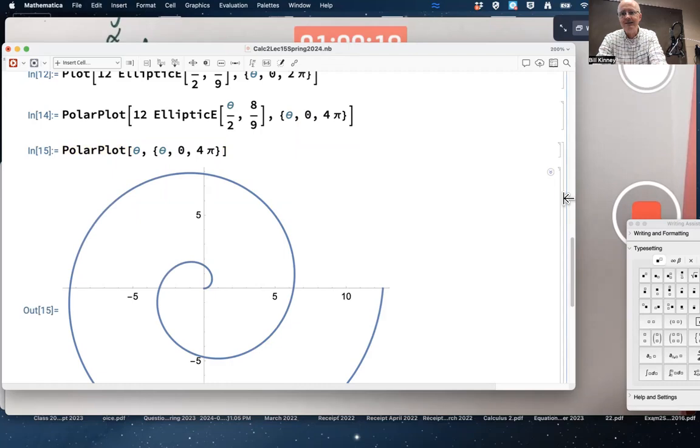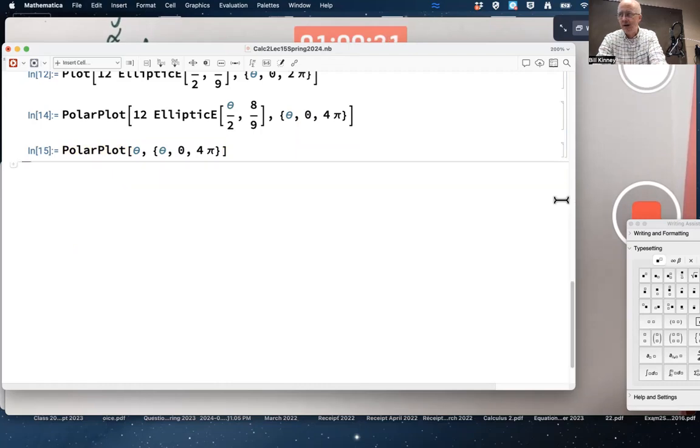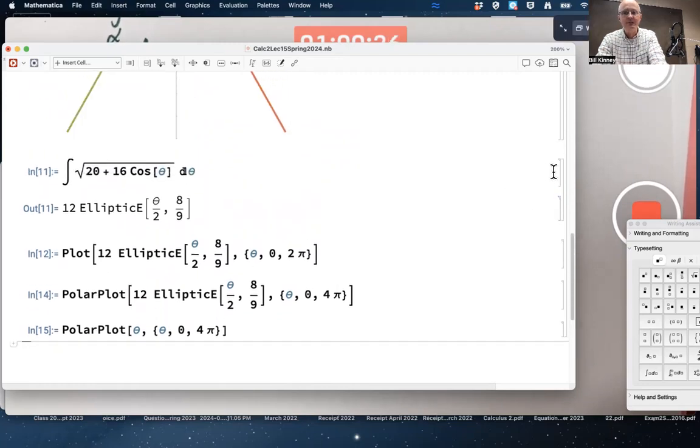So, with a polar plot, if R equals theta, then R keeps increasing as theta increases. So, it is an honest-to-goodness function, but that doesn't seem very helpful.